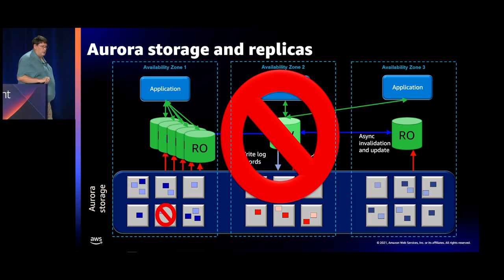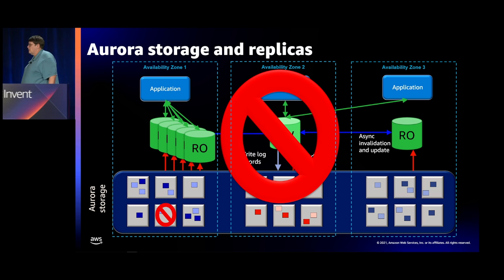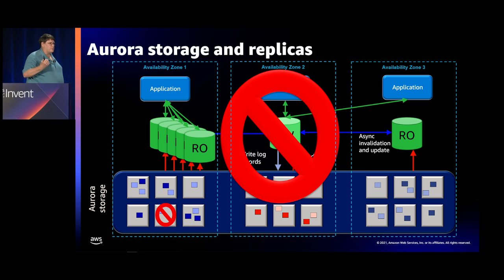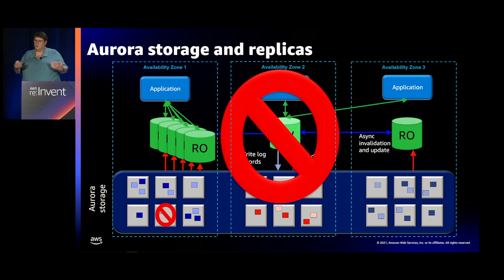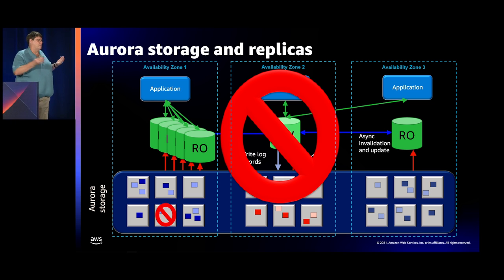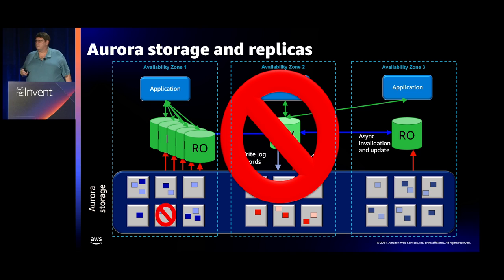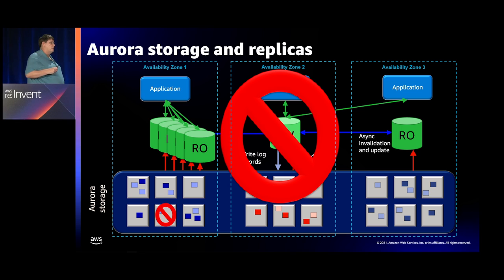What happens if the database crashes? We try and restart the database process on the same EC2 host — clean up any peripheral issues and restart. The buffer pool lives in a separate address space, so we don't lose the buffer pool when we restart Postgres or MySQL. That's the normal failure scenario — a restart on the same server.